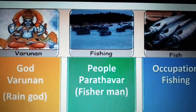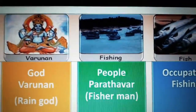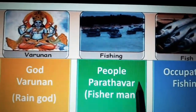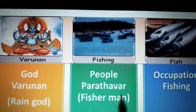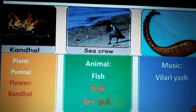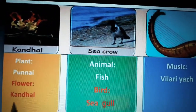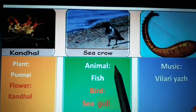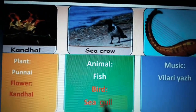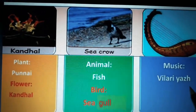Next, we learned about their theme. Their god was Barunan. Their people were Paradavar, and their occupation was fishing. Their plant was Punnai, their flower was Gandhal, their animal was fish, their bird was the seagull, and their musical instrument is Bilariyal.